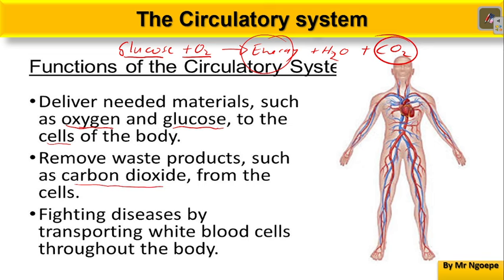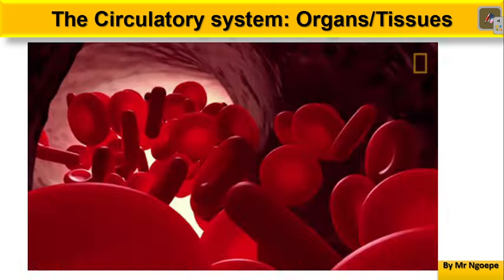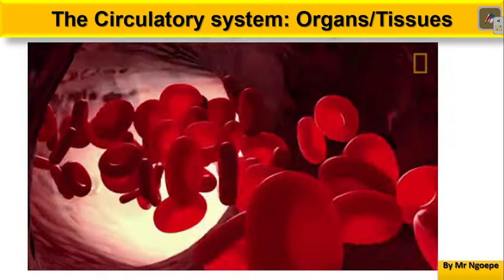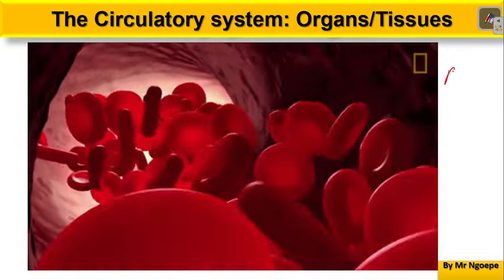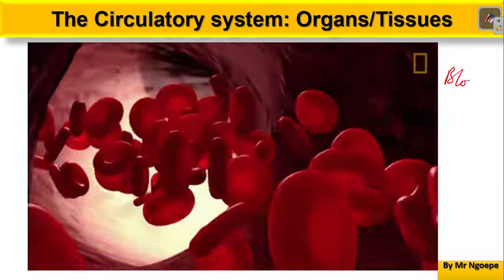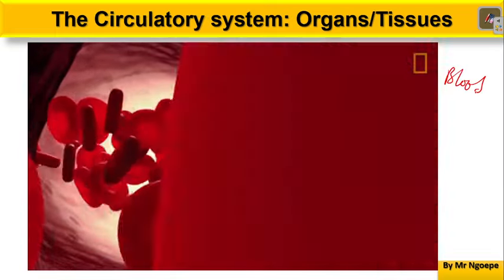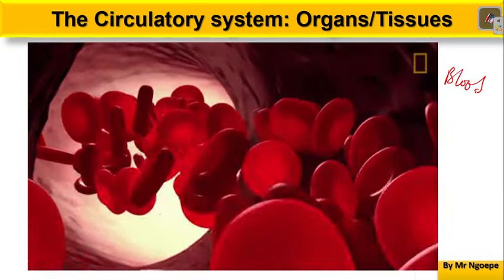Think of the tissues needed for your circulatory system as roads, vehicles, and goods. What is needed for your circulatory system? Well, blood. We need blood for your circulatory system.